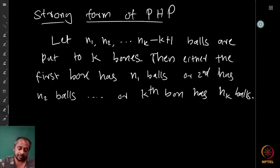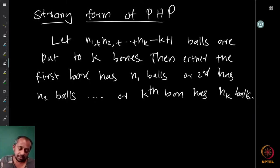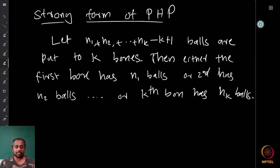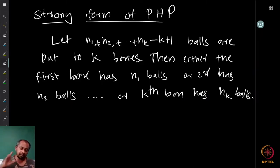Even stronger form of the Pigeonhole principle: suppose we have n1 plus n2 plus n3 plus etc. plus nk minus k plus 1 balls put into k boxes. This is n1 plus n2 plus etc. plus nk minus k — from each I am subtracting one and then putting one extra. So basically it's n1 minus 1 plus n2 minus 1 plus n3 minus 1 to nk minus 1, plus 1 balls thrown into k boxes.